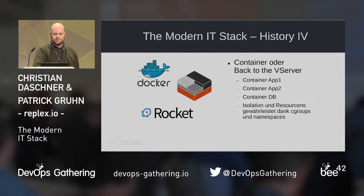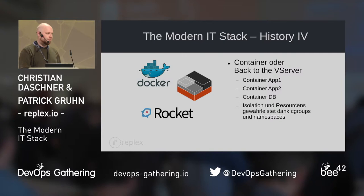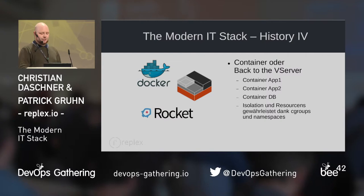Now we use the real modern IT stack with Docker, Rocket, Kubernetes, Apache Mesos, Mesosphere, and DC/OS. Now we have many, many applications on one server or on one cluster. The isolation is better — we have C-groups, namespaces, and all the other stuff. Orchestrating with Mesosphere and Kubernetes.